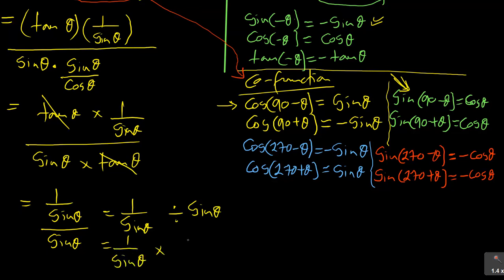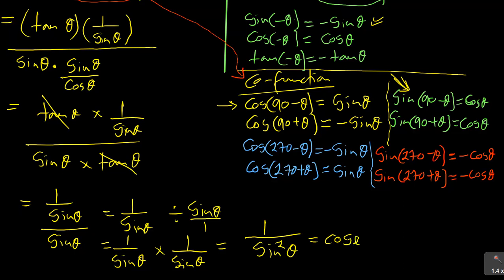That gives 1 over sin²θ, which is equal to cosec²θ. That is basically what this expression simplifies to — so the final answer is cosec²θ.